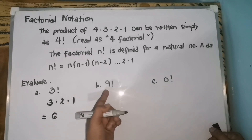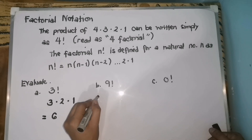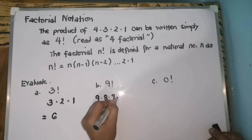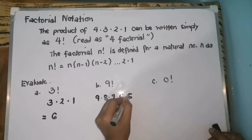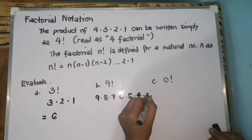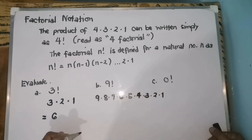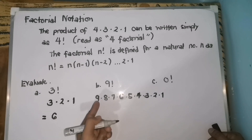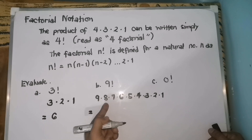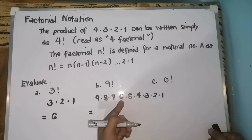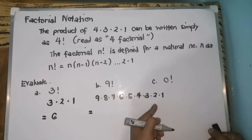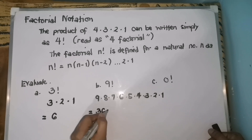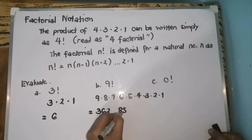How about 9 factorial? To evaluate 9 factorial, simply 9 times 8 times 7 times 6 times 5 times 4 times 3 times 2 times 1. When we multiply: 9 times 8, then that product is multiplied by 7, then by 6, and so on. So 9 factorial is 362,880.